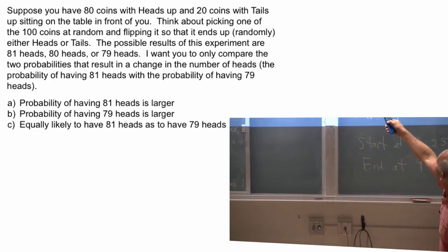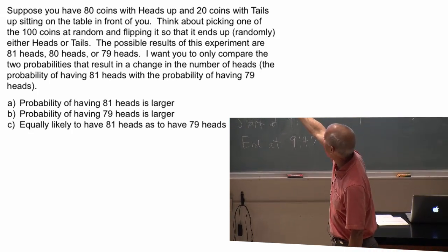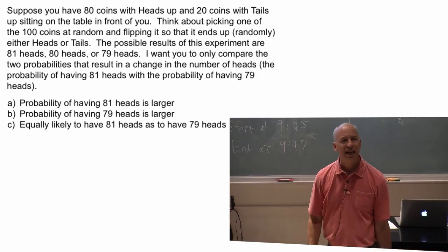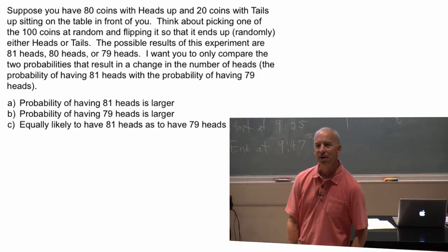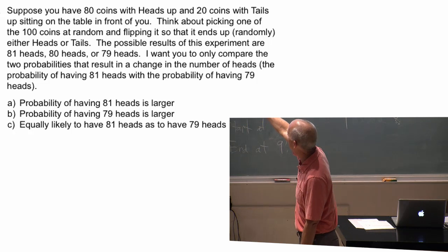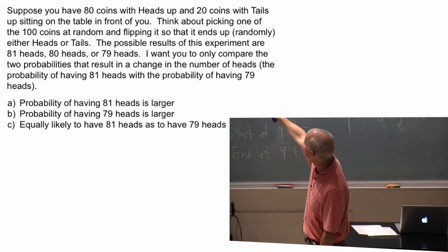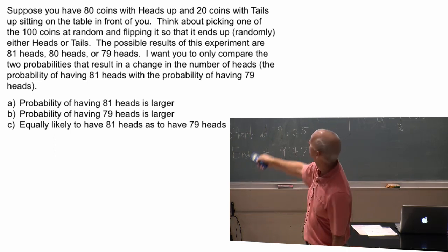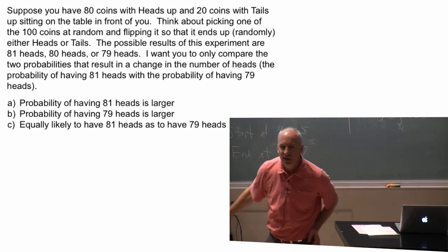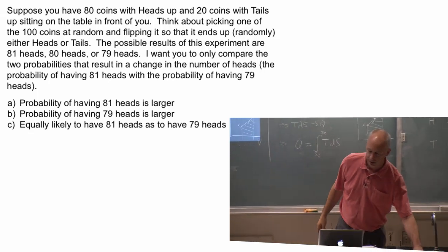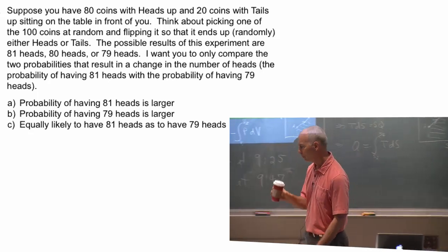So I'm only asking you to compare two probabilities: 81 and 79. I don't care about 80. All I want you to think about is: is the probability of having 81 larger than the probability of 79, or is 79 larger than 81, or are 81 and 79 equally probable? Talk about it.